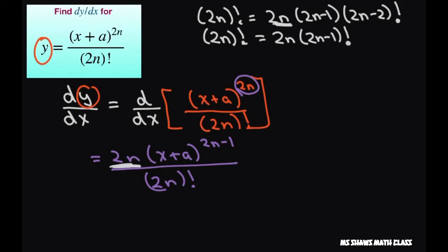So this is going to equal 2n times x plus a to the power of 2n minus 1 divided by 2n times 2n minus 1 factorial. And the reason I did that is because now these 2n cancel.